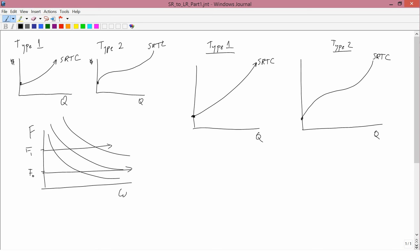And I'm going to label this SRTC0, and this SRTC0, and this FC0, that's the initial amount of the fixed cost, because if Q equals 0, total cost is equal to fixed cost.